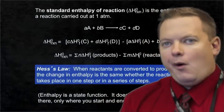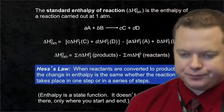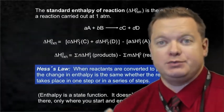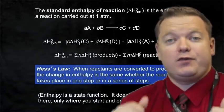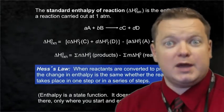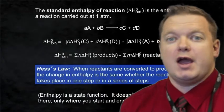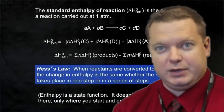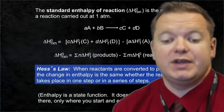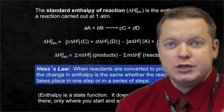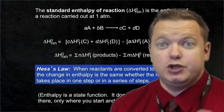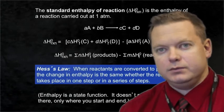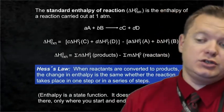From table values we can calculate the standard enthalpy change of a reaction, or we can use Hess's Law. When reactants are converted to products, the change in enthalpy is the same whether the reaction takes place in one step or in a series of steps. If we know the enthalpies of several stepwise reactions and their sum equals the reaction we're interested in, then the sum of those ΔH values equals the ΔH of that reaction. This is true because enthalpy is a state function — it only matters that we go from reactants to products, not how.